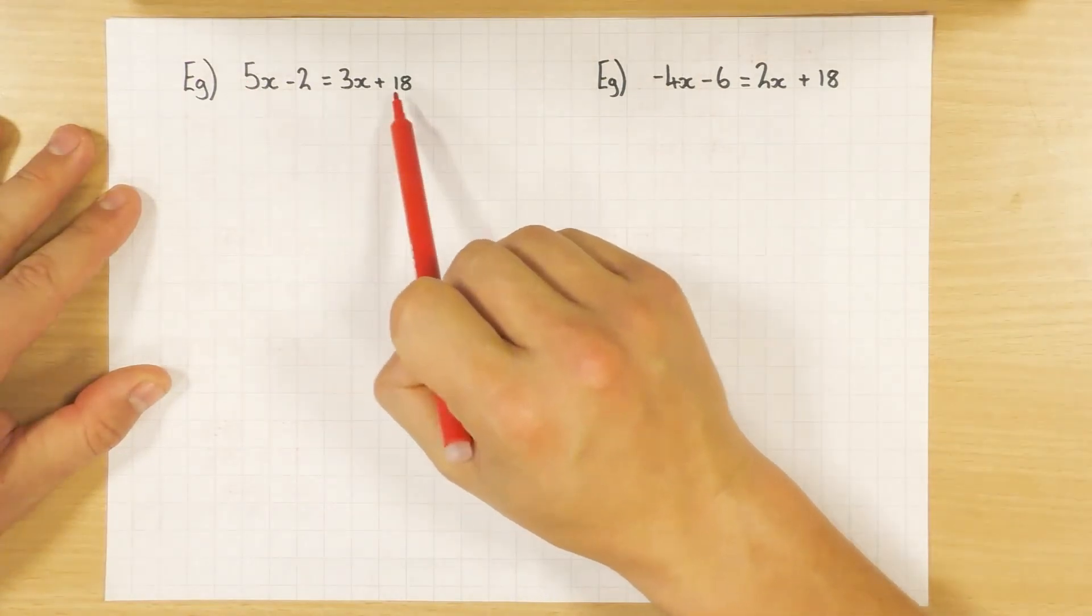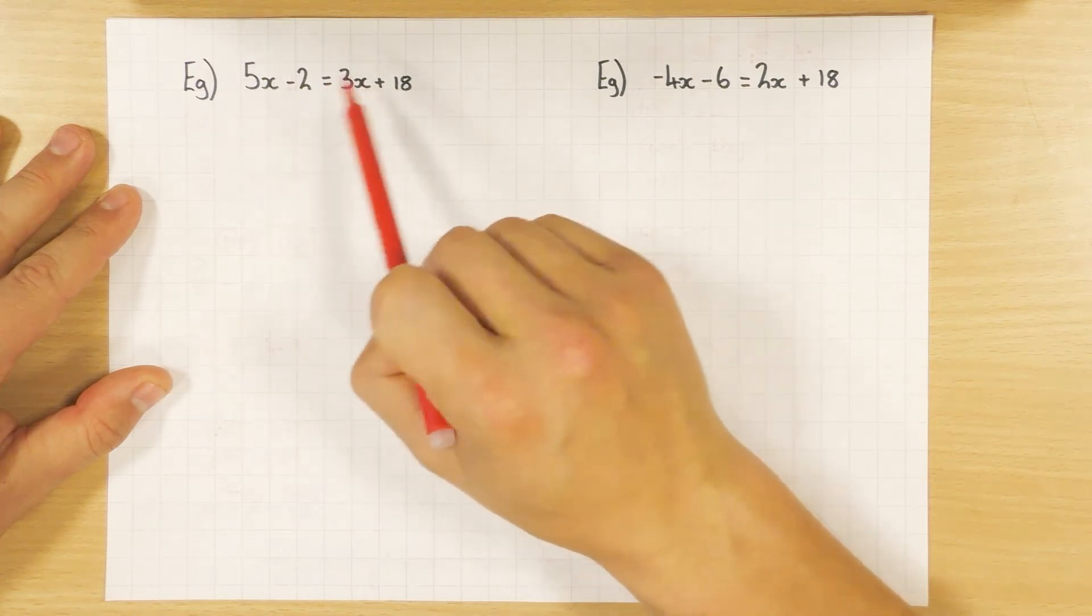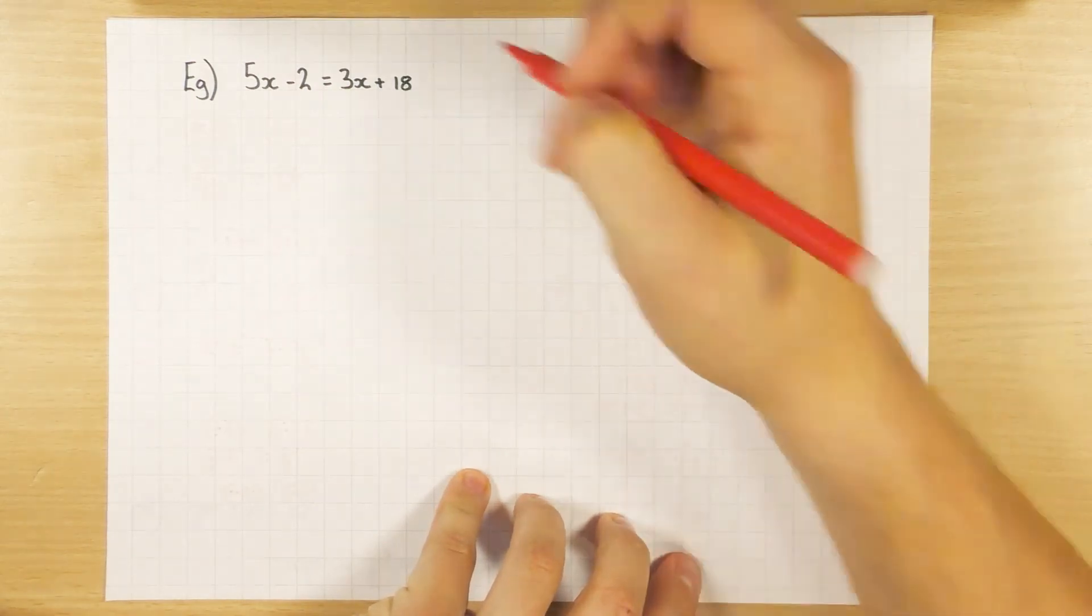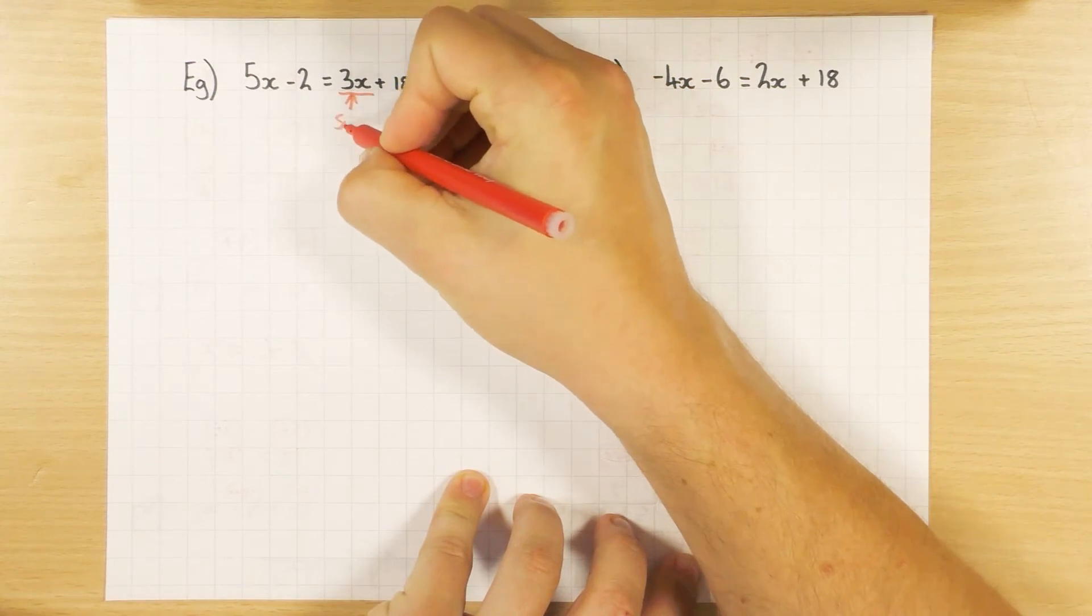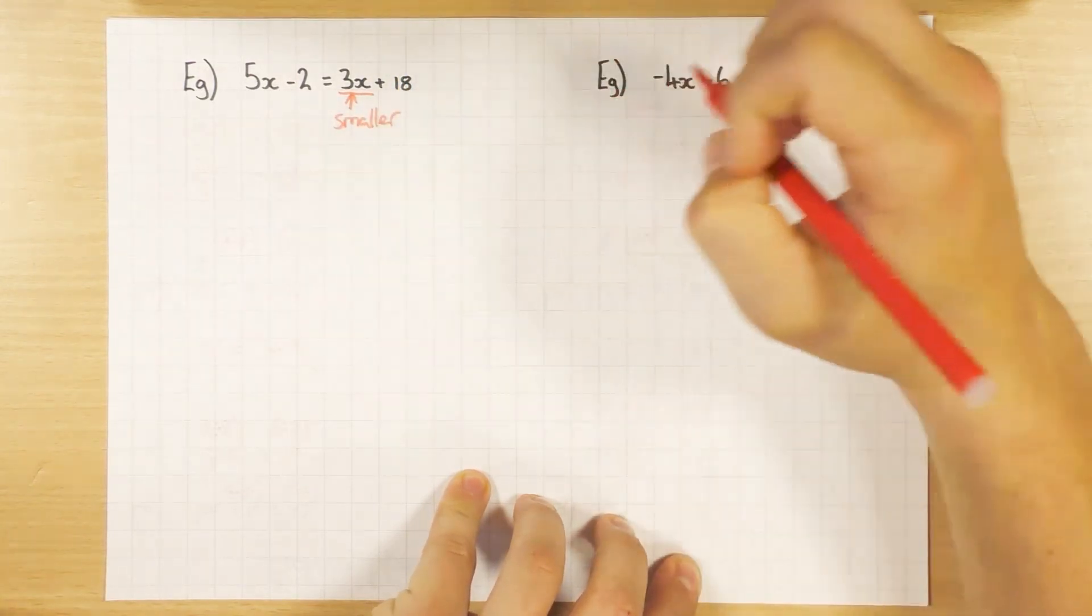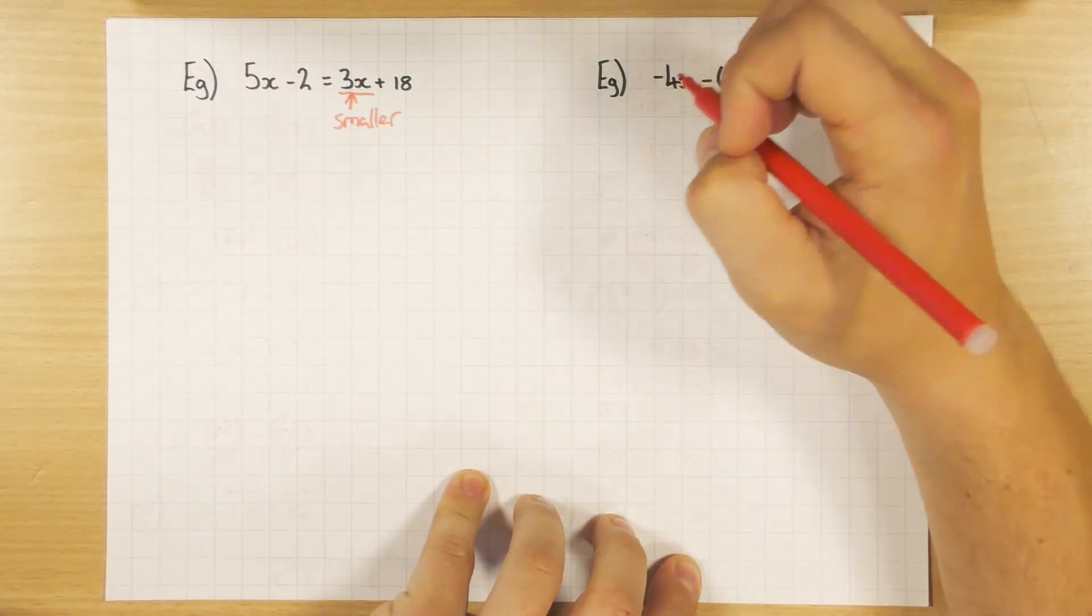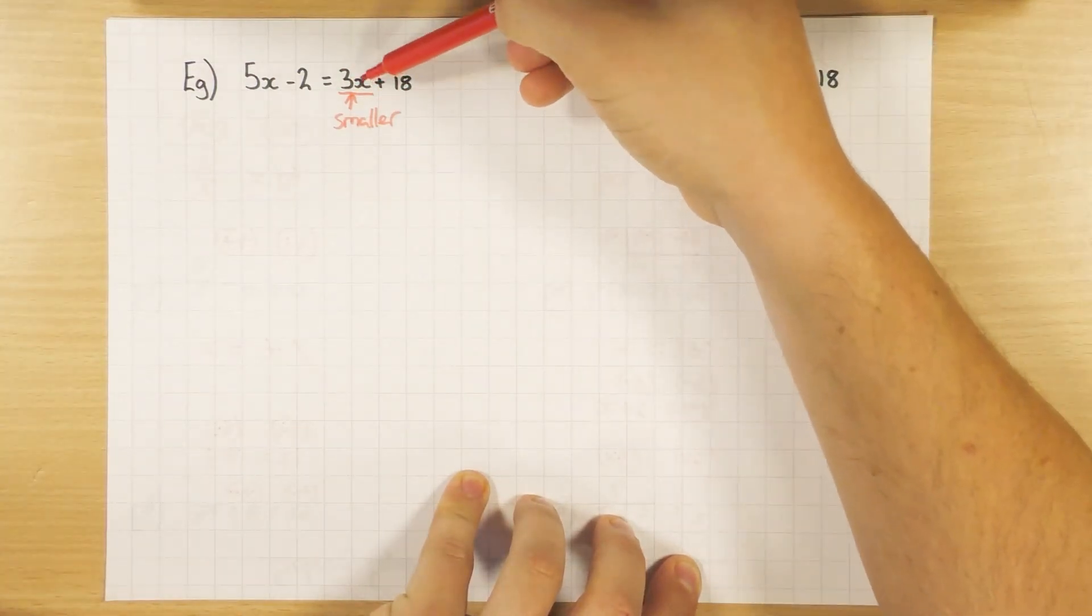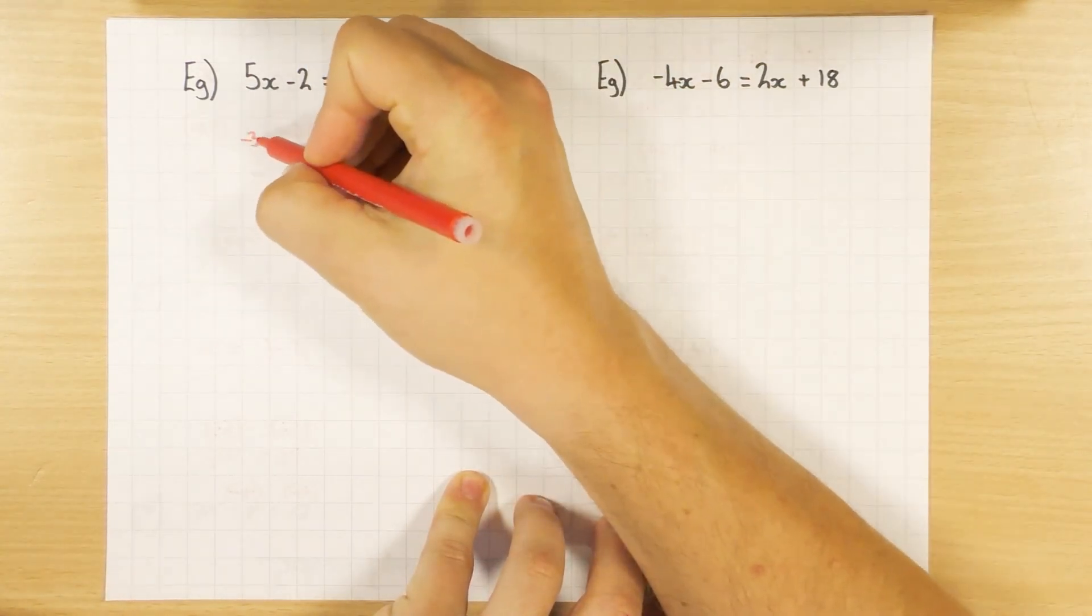So in this particular one here, I have a 5x and I have a 3x. So in this case, I have x's on both sides. Now, the first thing to do is get rid of the smallest one. So in this case, the 3x is the smaller one. Always get rid of the smaller one. You can do it another way around, but then you start dealing with negatives and it gets a bit messy. And yeah, there's no need to. So find the smallest one, get rid of it. Currently, it's plus 3x. So to get rid of it, I minus 3x. Again, to both sides. So it remains balanced.